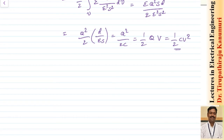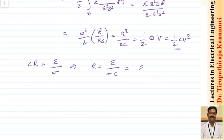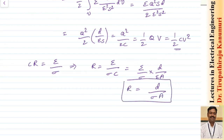Now for the time constant: we have seen that C multiplied by R equals epsilon divided by conductivity sigma. From this, R equals epsilon divided by sigma·C. Substituting C equals epsilon·A divided by d, epsilon cancels, giving R equals d divided by sigma·A. This is the value of the leakage resistance of the capacitor. The greater the conductivity, the smaller the resistance, meaning more leakage current.